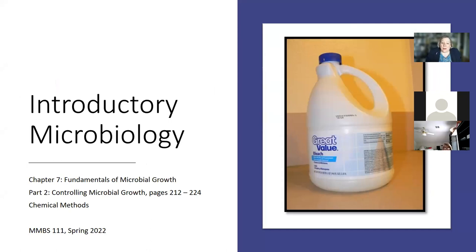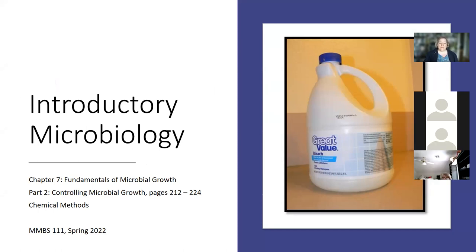Today we're going to continue our discussion of the last part of chapter seven, fundamentals of microbial growth, specifically controlling microbial growth. Today we're going to talk about chemical methods of doing that, including bleach.